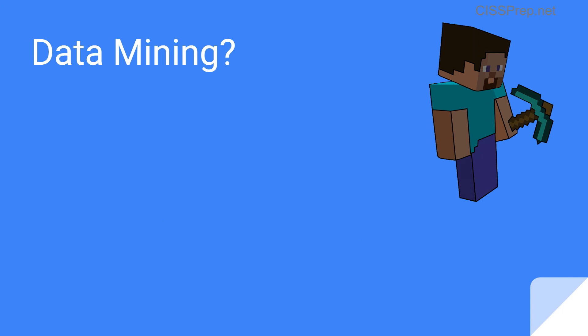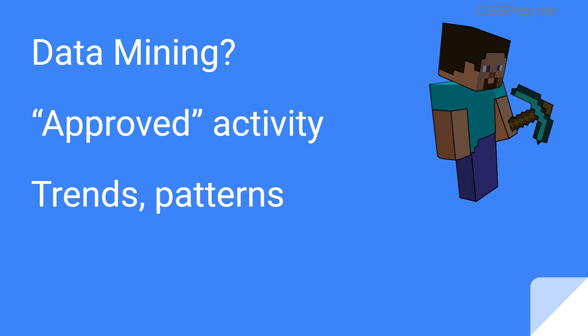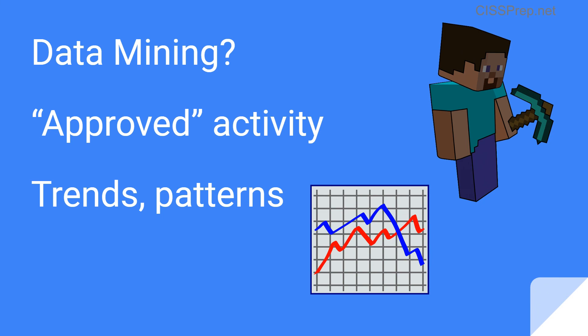So what is data mining? The simplest way to define data mining is running complicated searches on a database. One key difference is that data mining assumes an approved user or process is running those searches. And it's not just searches — it's creating analysis, finding trends, finding patterns, finding relationships between data sets and data points. It's a whole family of activities done against a large set or sets of data, and it can also be called data discovery. Aggregation and inference typically assume that reconnaissance is being done by an unauthorized party, whereas data mining is done by someone or something with authorized access.